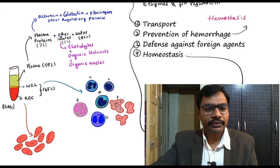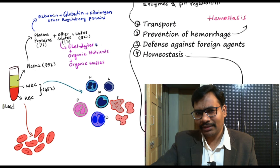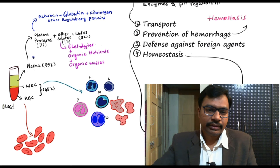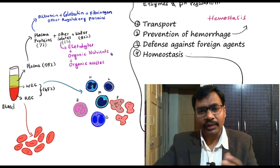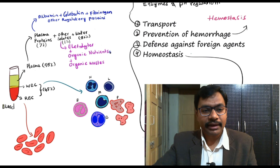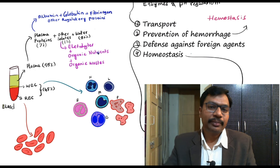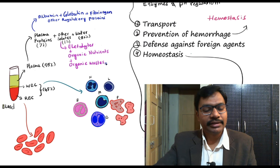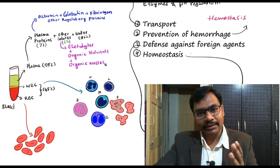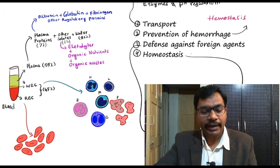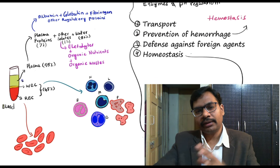The 1 percent of other solutes includes electrolytes such as sodium, potassium, calcium, and chloride. We also have organic nutrients like glucose, amino acids, fats, and triglycerides. Organic wastes — which are cellular or metabolic end products dissolved in plasma — include urea, uric acid, lactic acid, and others. A certain amount of carbon dioxide is also dissolved in physical form in the plasma, transporting from cells back to the lungs.